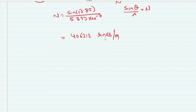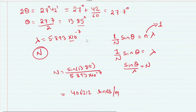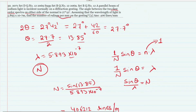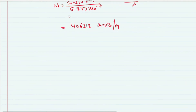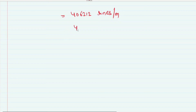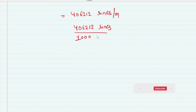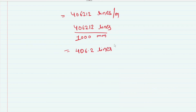Converting lines per meter to lines per mm: N in lines per meter is large, so dividing by 1000 gives lines per mm. The result is approximately 406.2 lines per mm. So the number of rulings is 406.2 lines per mm.